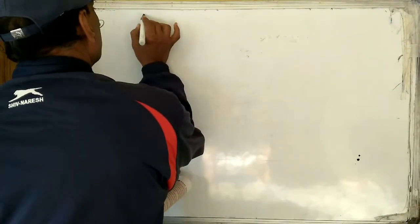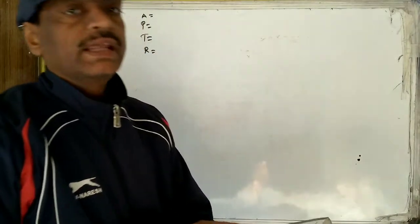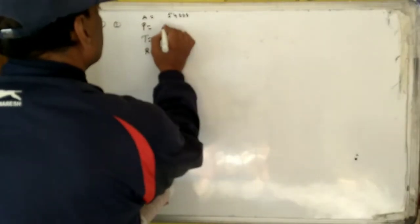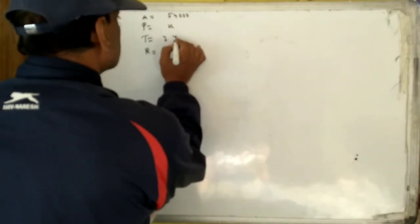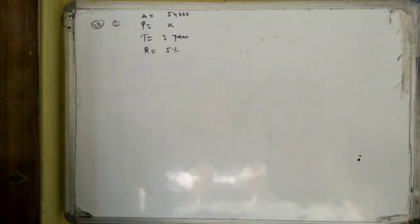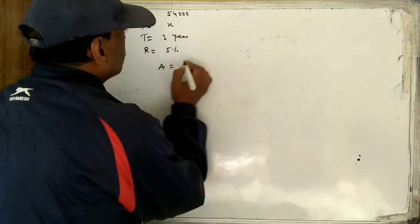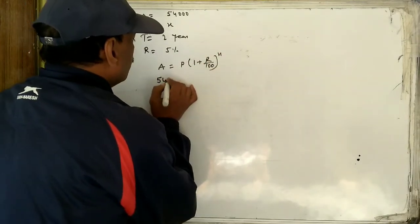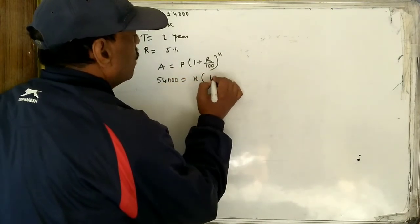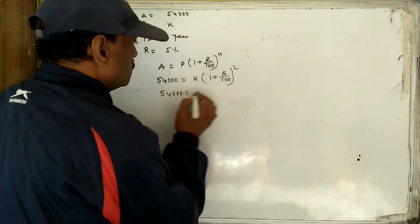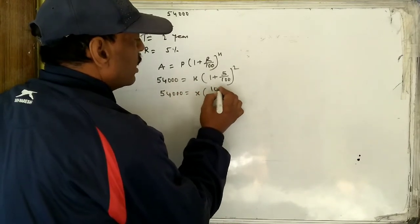The principal is not given — the population two years earlier is what we need. We let the unknown population be X. The amount (present population) is 54,000, time is 2 years, and rate is 5%. We put these into the formula and solve for X, whose value will be our answer.